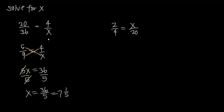So in order for these ratios to be equal, x has to be equal to 7 and 1 fifth. That means if I give you 20 and you give me 36 back, then when I give you 4, you're gonna give me 7 and 1 fifth back in order for these things to be equal.